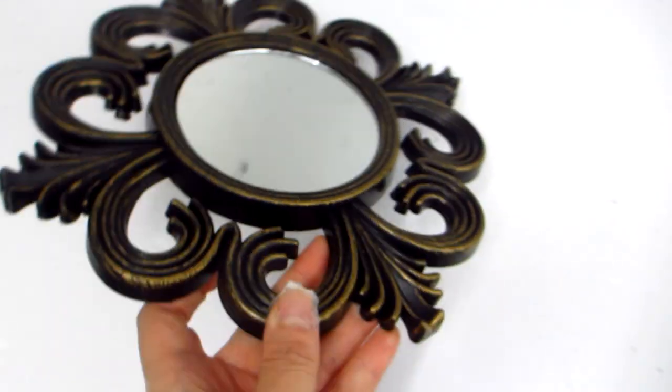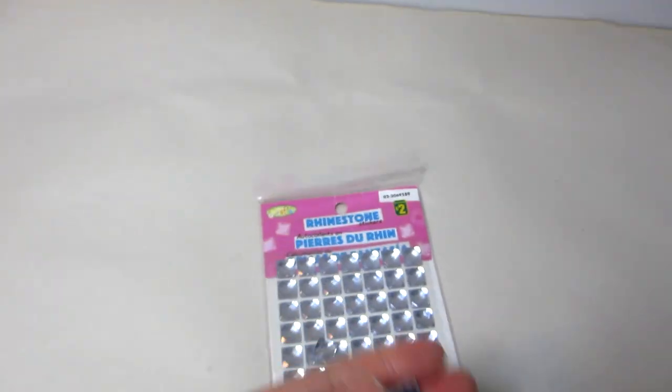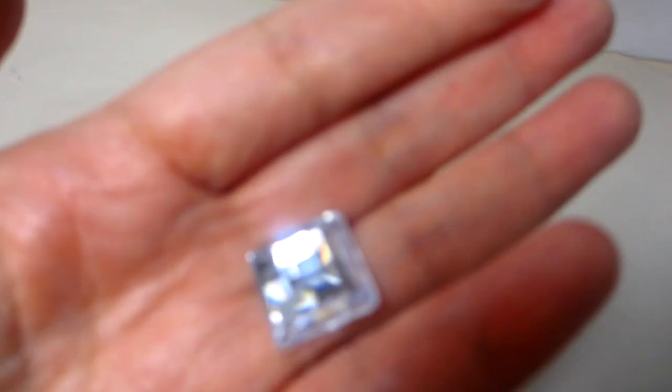For the base we will need one of these decorative mirrors and some clear square acrylic gems. These loose flat back ones were purchased in bulk from Alibaba but if you are lucky you can also find similar ones in sticker format from Dollarama.